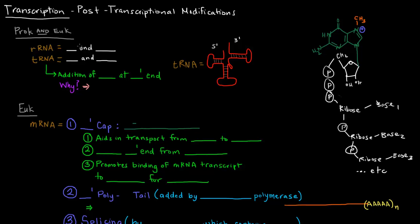In this video, I want to talk about post-transcriptional modification. So these are ways in which the RNA that's been transcribed is modified in some way. In prokaryotes and eukaryotes, they both have their RNA and tRNAs processed in a certain way, and actually pretty much the same way.